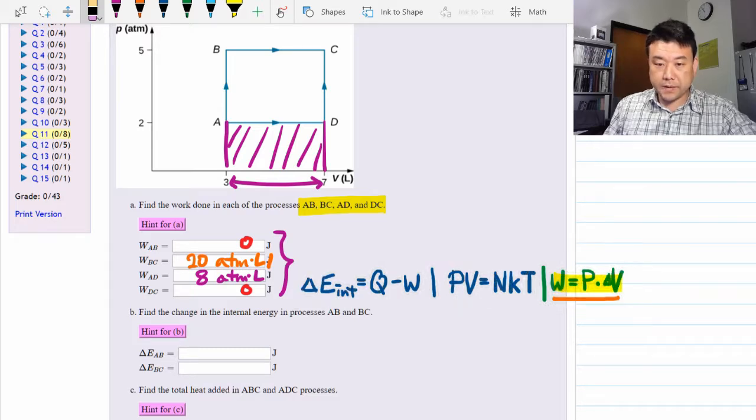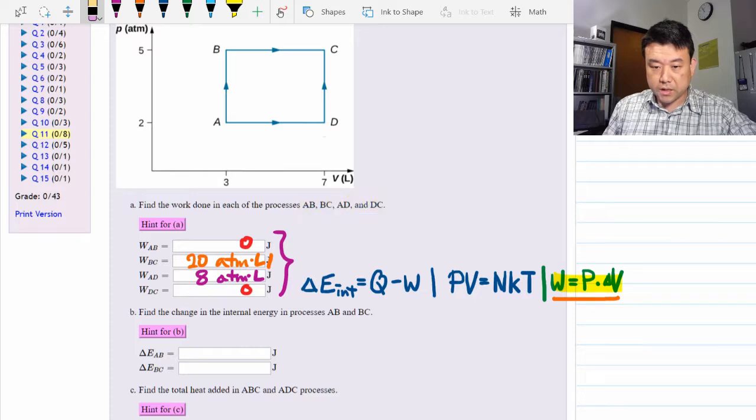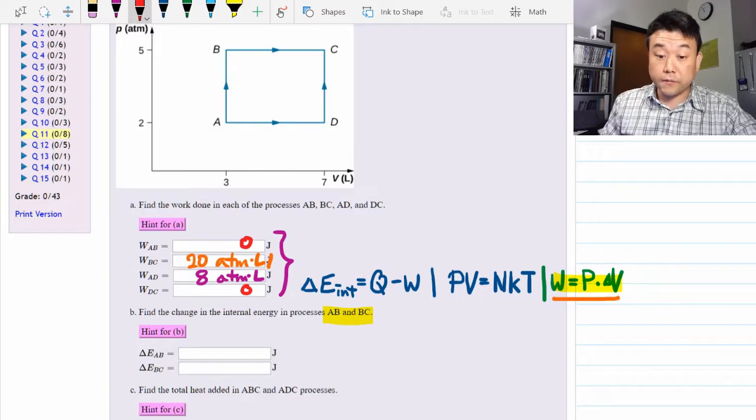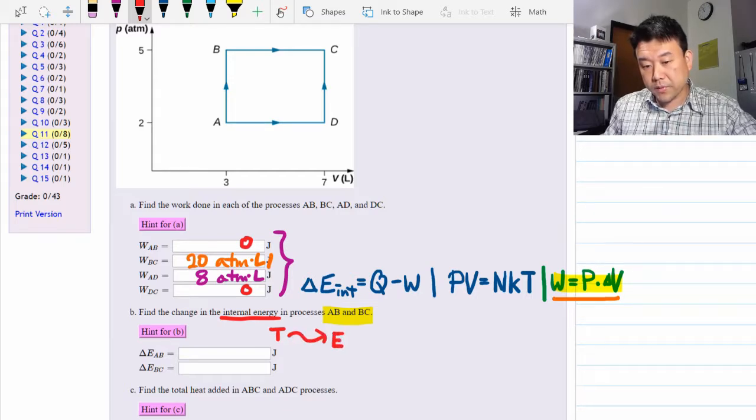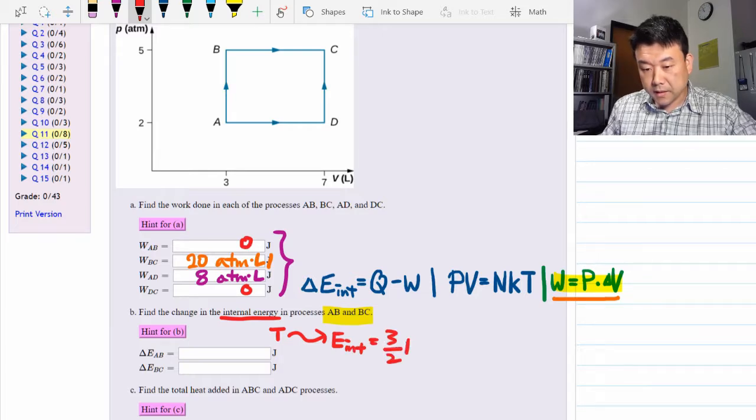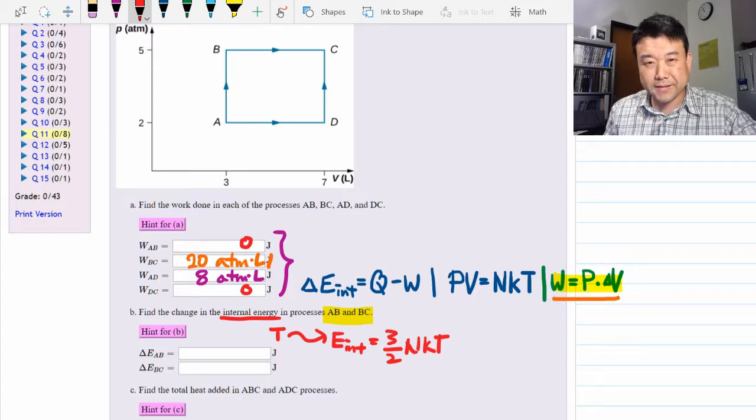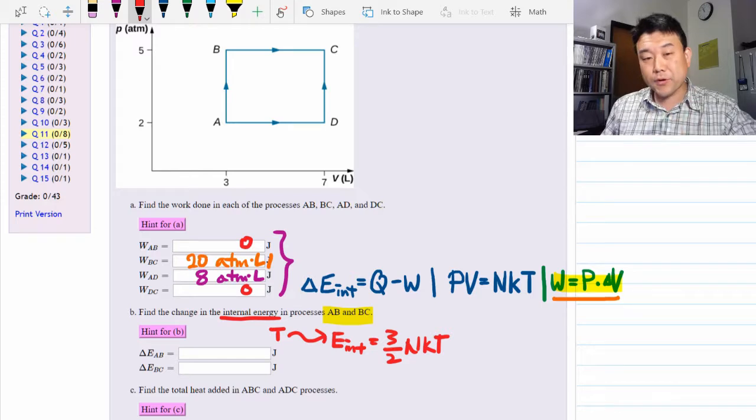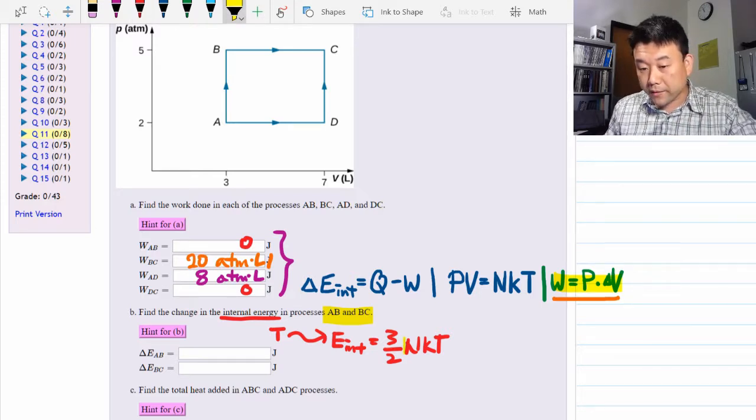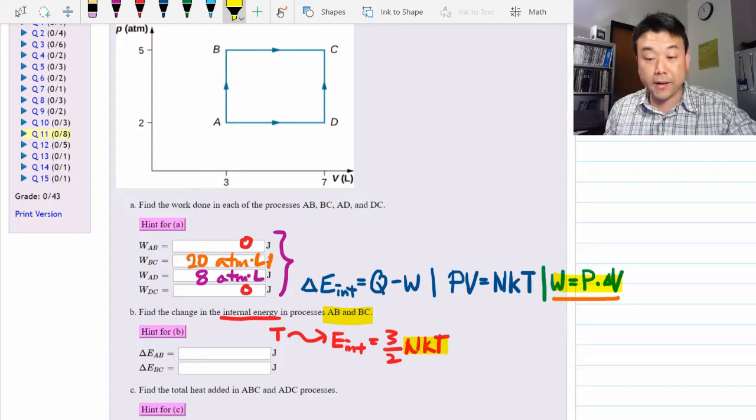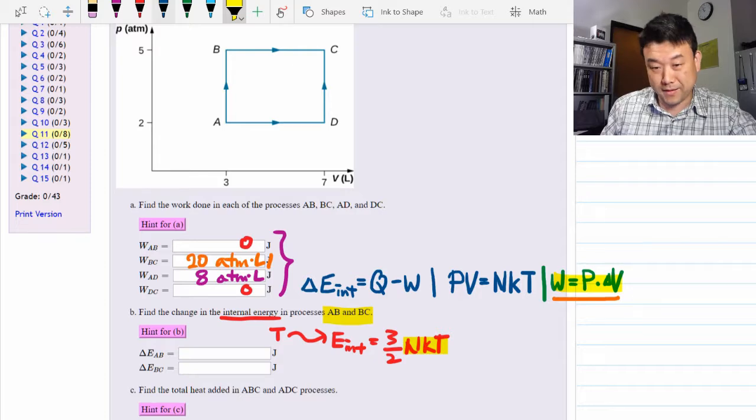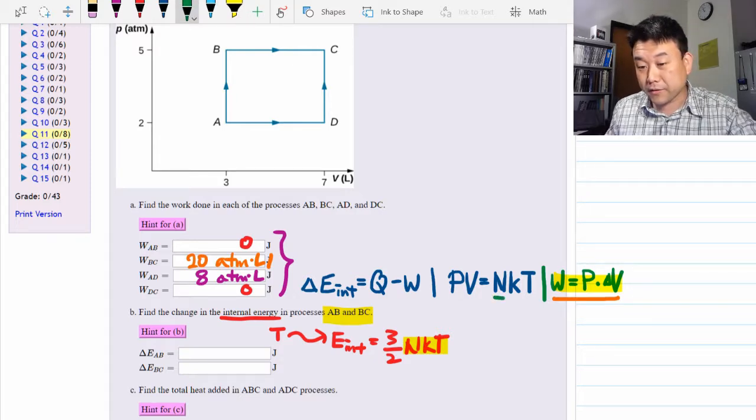Now part B asks for the change in the internal energy in the processes AB and BC. And since it's looking for internal energy, what we are really looking for is temperature. Because once we know temperature, then we can get internal energy by this formula: three halves NKT for monatomic gas. And in fact, it's not actually the temperature we would like to solve for. It's actually the whole quantity NKT that we want. Then we don't have to solve separately for number of molecules and we can just solve for NKT. And this is where I hope you feel lucky, because NKT is one of the terms in the ideal gas law.